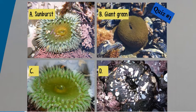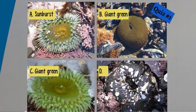What about C? This is also a giant green anemone. The other picture showed it closed. This is one that is open, and you can see on the oral disc there are no radiating lines.